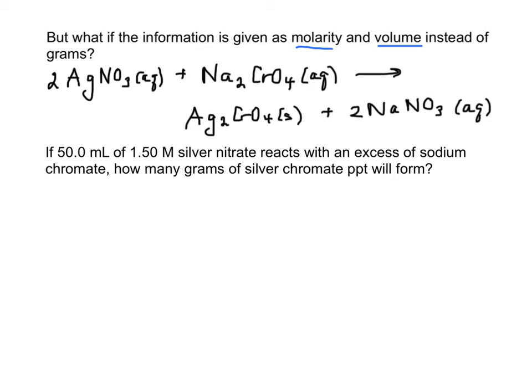This is going to happen a lot when reactions are occurring in solution. So you'll notice this is in solution, and we get a precipitate forming. So for instance, if 50 milliliters of 1.5 molar silver nitrate reacts with an excess of sodium chromate, how many grams of silver chromate precipitate will form?